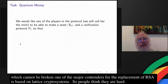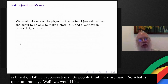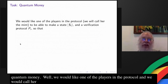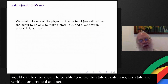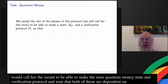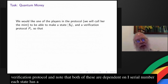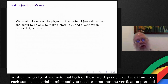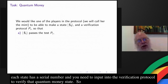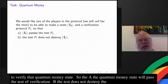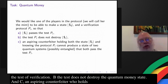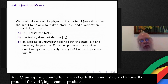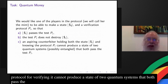So what is quantum money? We would like one of the players in the protocol — we'll call her the mint — to be able to make a state called the quantum money state and a verification protocol. Both of these are dependent on I, which we'll call the serial number. So each quantum money state has a serial number, and you need to input the serial number into the verification protocol to verify that quantum money state. The properties we want are: A, the quantum money state will pass the test of verification; B, the test does not destroy the quantum money state; and C, an aspiring counterfeiter who holds both the quantum money state and knows the verification protocol cannot produce a state of two quantum systems that both pass the test T_i.